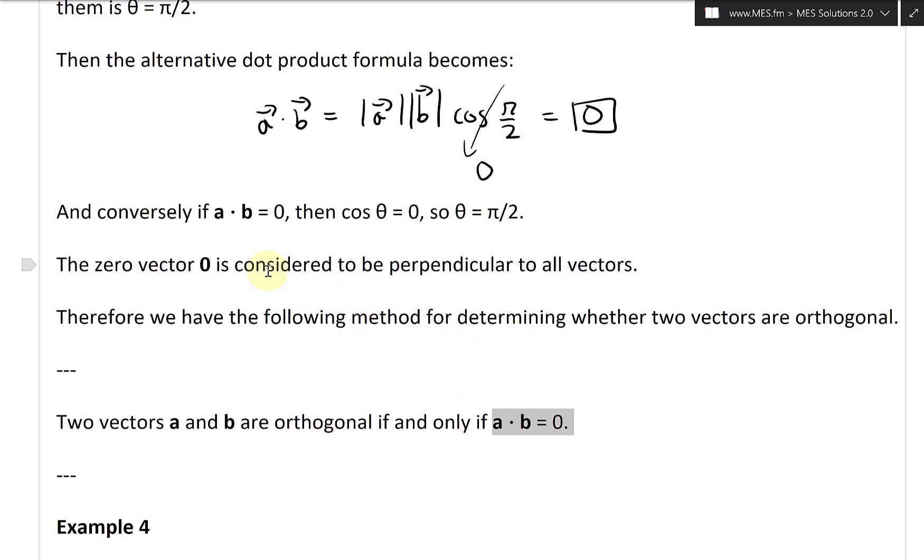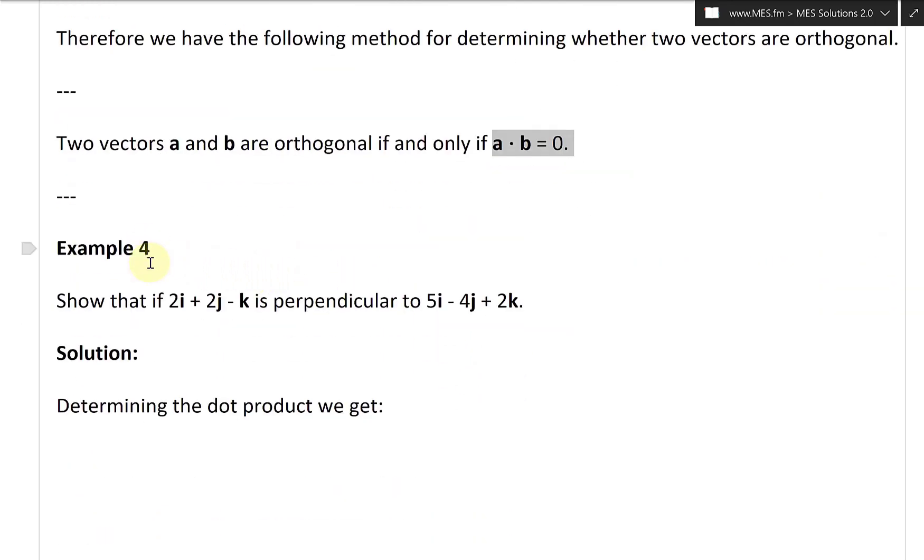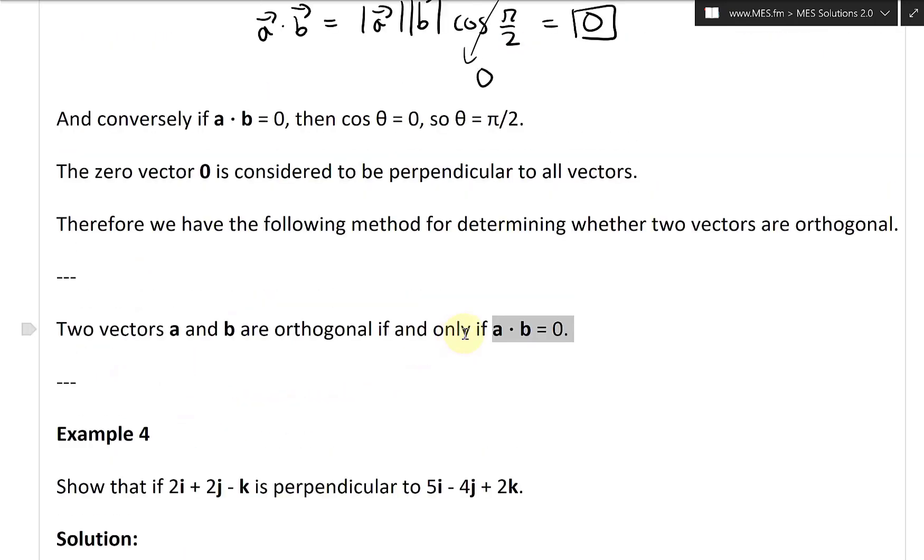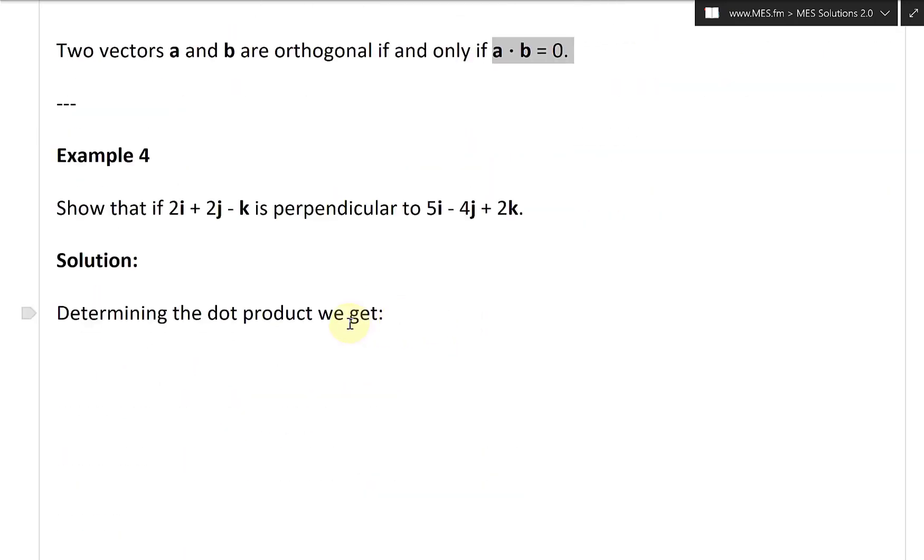Now let's take a look at example four. This one states, show that 2i vector plus 2j minus k is perpendicular to 5i minus 4j plus 2k. Solution: Determining the dot product, all we got to do is determine the dot product. If it's zero, then it's perpendicular.